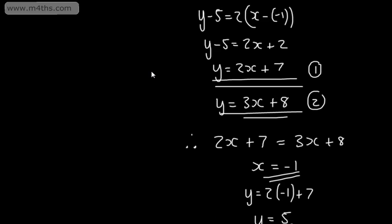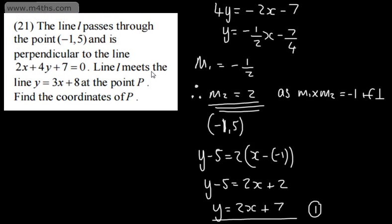That's an introduction to parallel and perpendicular lines. If you have parallel lines, the gradients are equal. If you have perpendicular lines, the product of the two gradients is negative 1, or we have the negative reciprocal in terms of gradient.